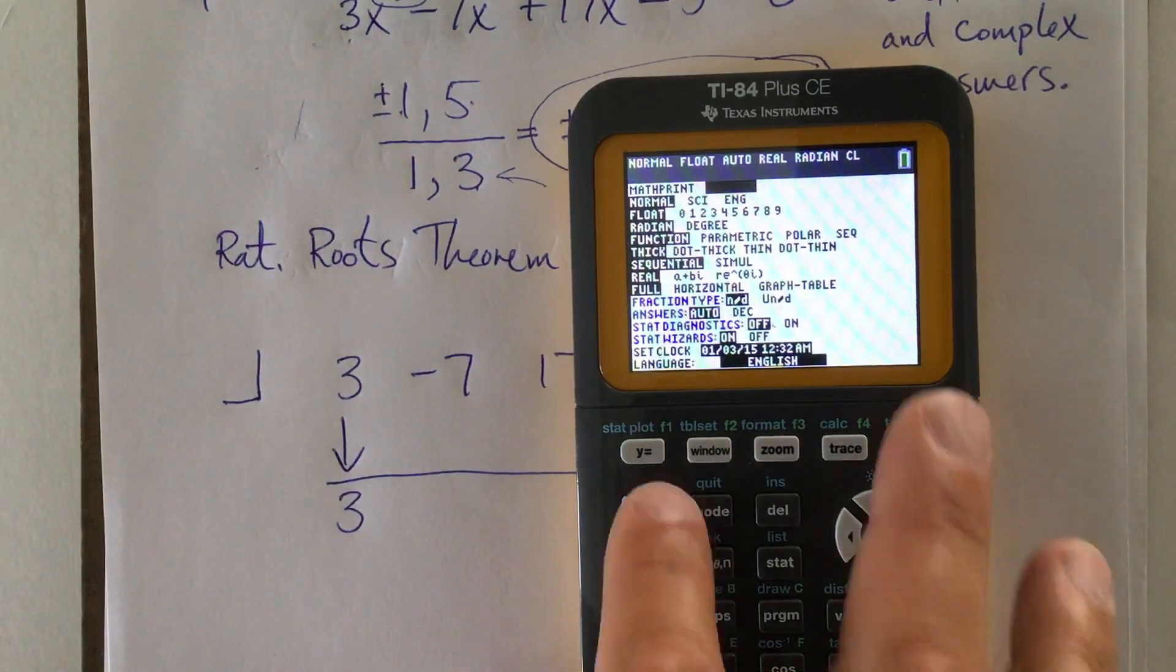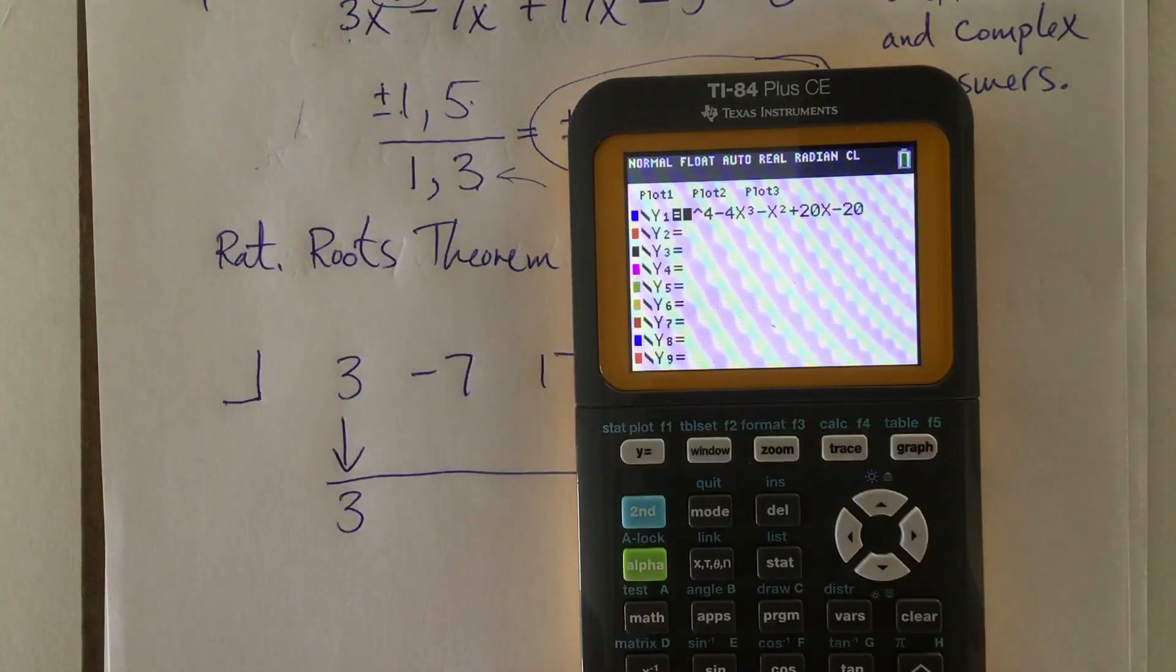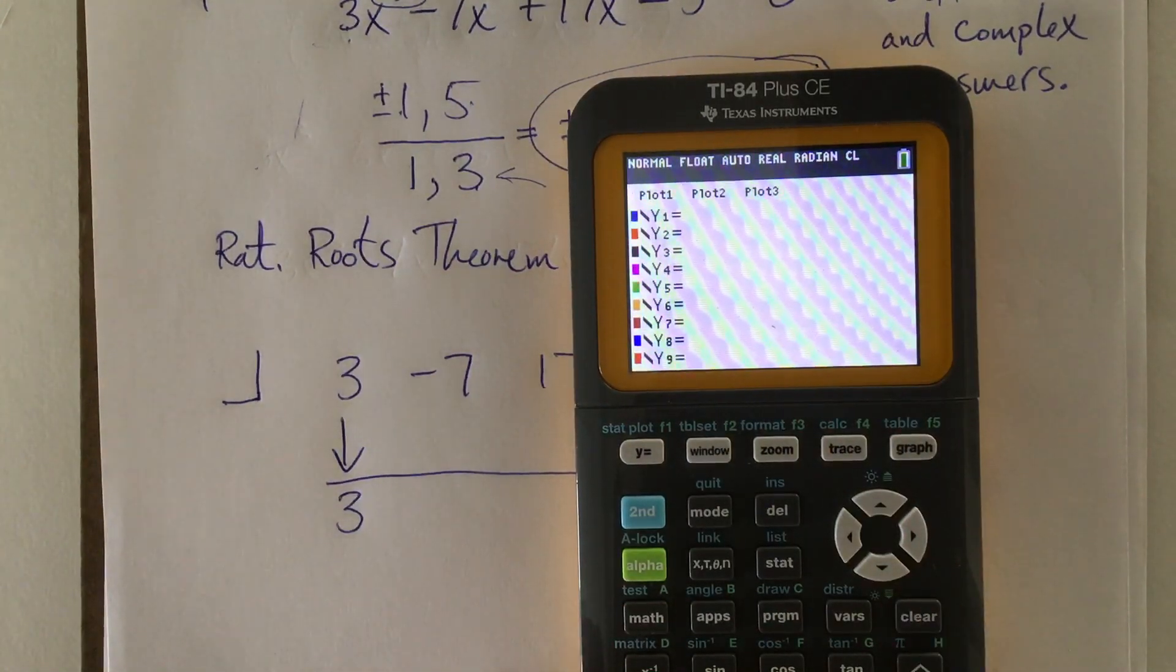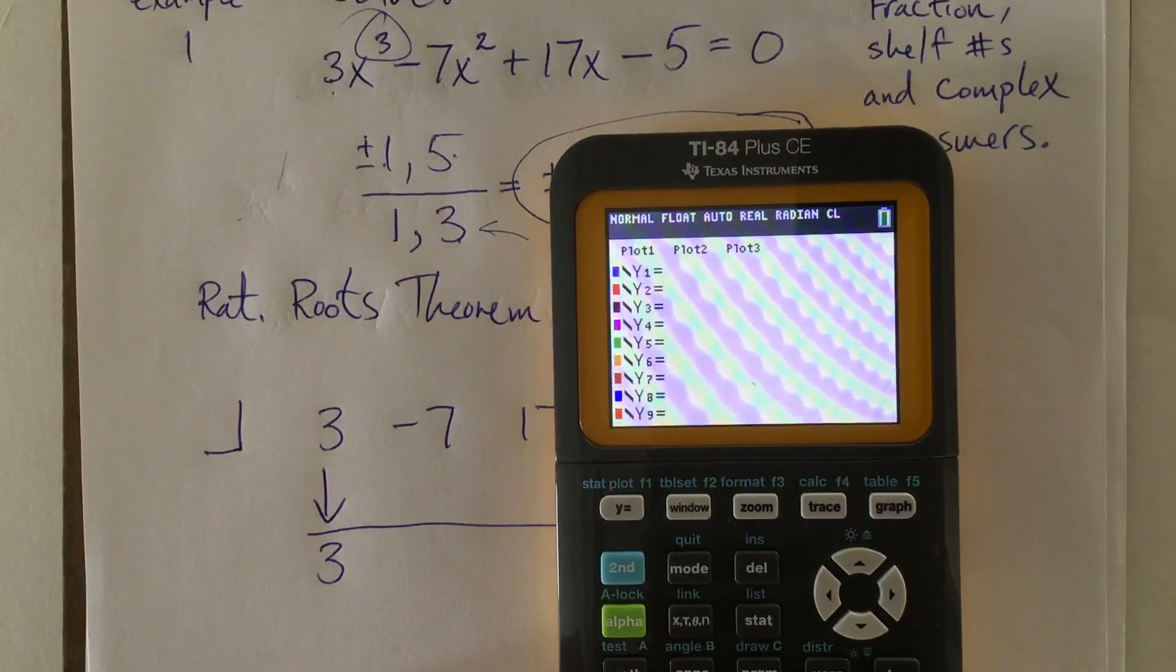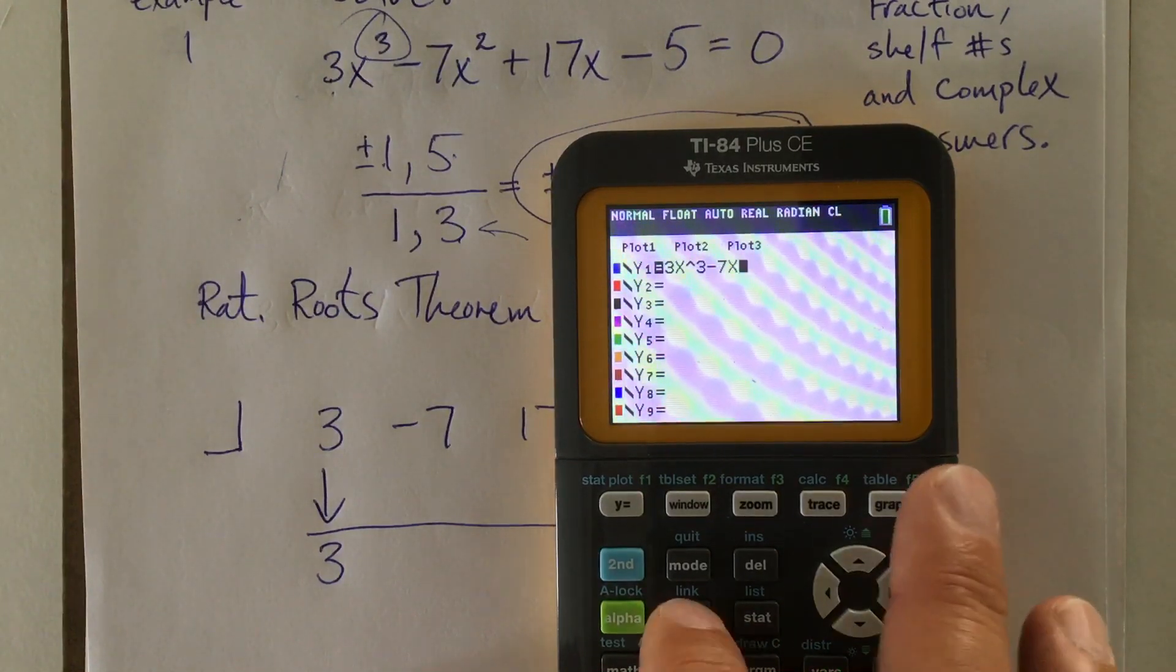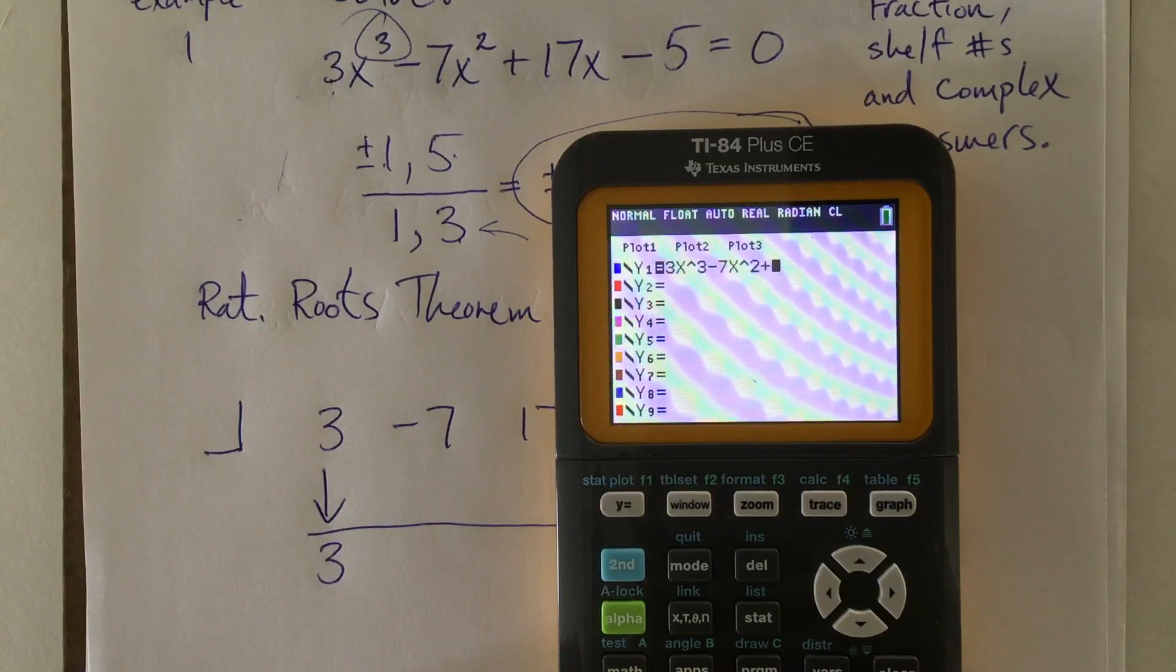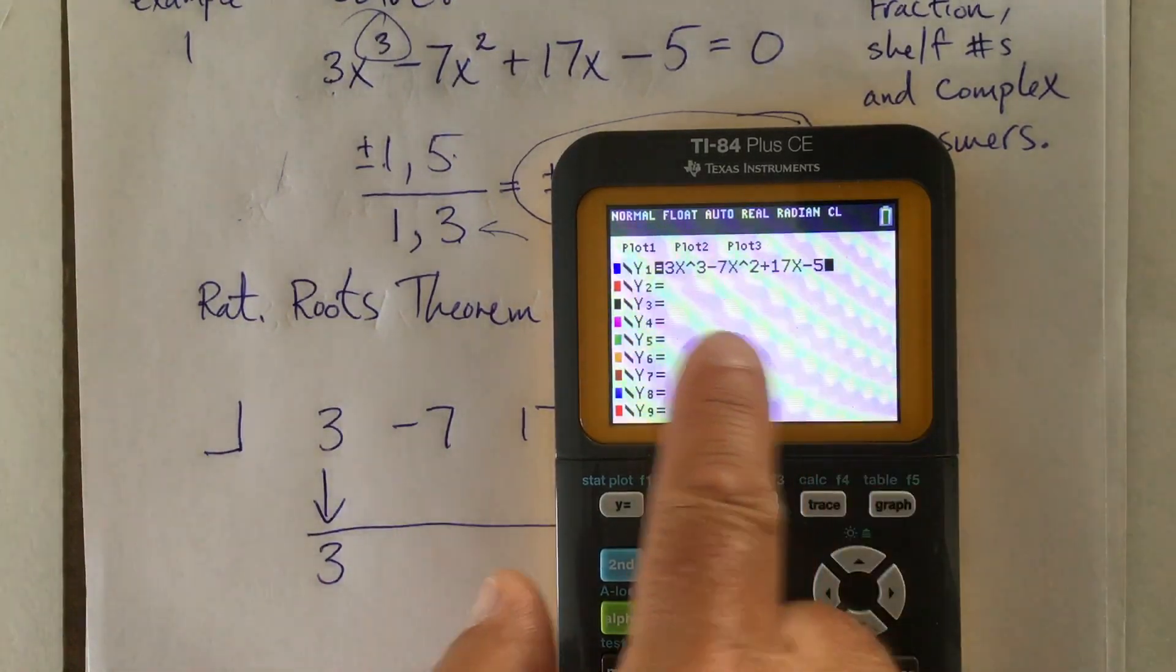So I'm going to use classic mode. I'm going to quit that screen right above mode says quit. I'm going to go to y equals and I say, wait, that's from my last thing I did. So I'm going to clear it out. And I'm going to enter in this new guy. This new guy is 3x to the third minus 7x to the second plus 17x minus 5.